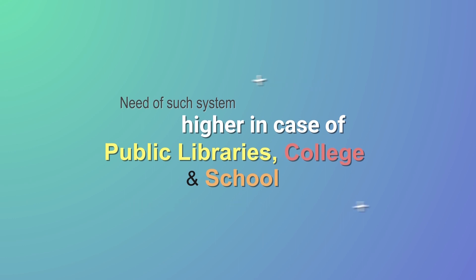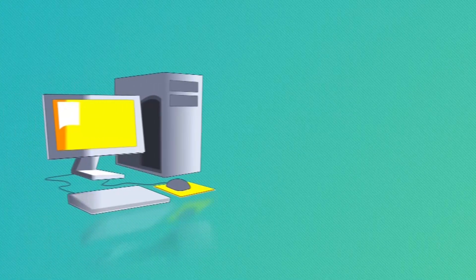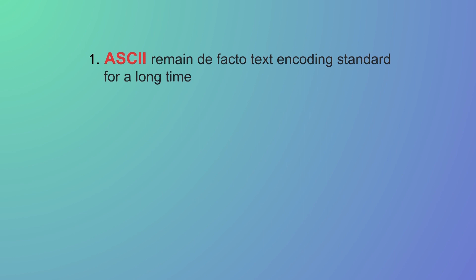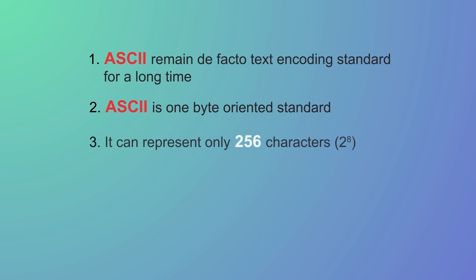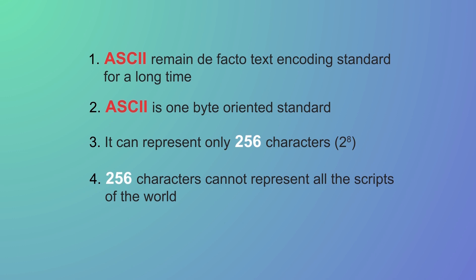How is text actually managed by computer systems? Inside the computer, we have different kinds of text encoding standards. ASCII has remained the de facto standard from the 1960s onwards. ASCII is basically a one-byte code — it can represent at best 256 characters, because for n number of bits the formula is 2 to the power 8, which equals 256. This means 256 characters cannot cover all the languages and scripts of the world.